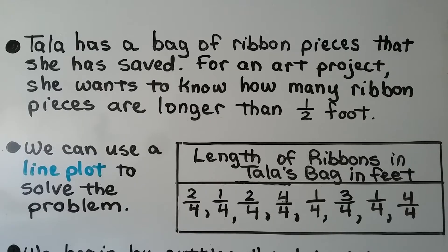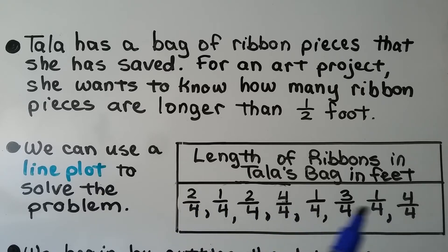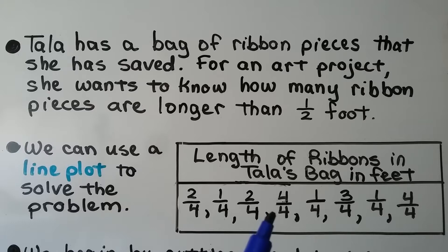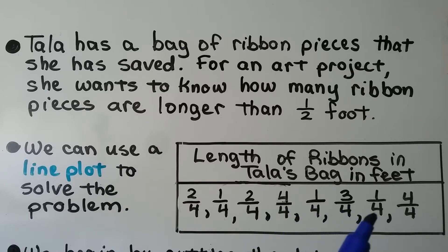Tala has a bag of ribbon pieces that she has saved. For an art project she wants to know how many ribbon pieces are longer than half of a foot. We can use a line plot to solve the problem. Here's the length of her ribbons in feet: two-fourths, one-fourth, two-fourths, four-fourths, one-fourth, three-fourths, another one-fourth, and another four-fourths.